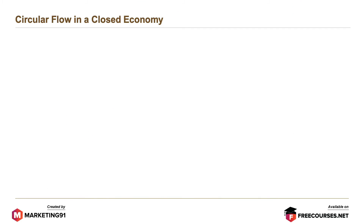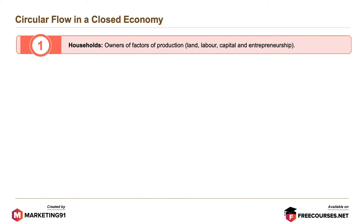Circular flow in a closed economy has six elements. Households are owners of factors of production: land, labour, capital, and entrepreneurship.